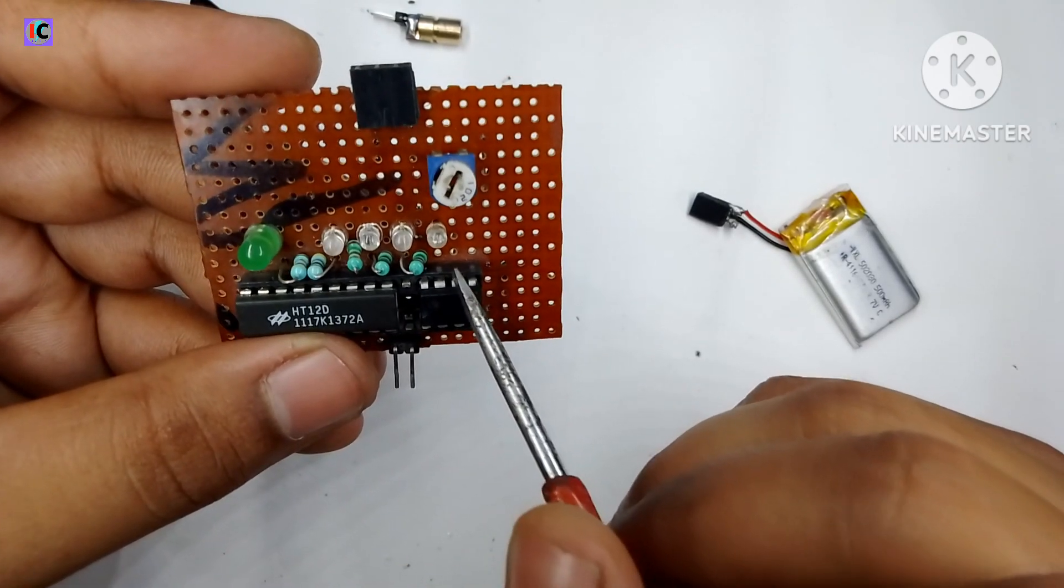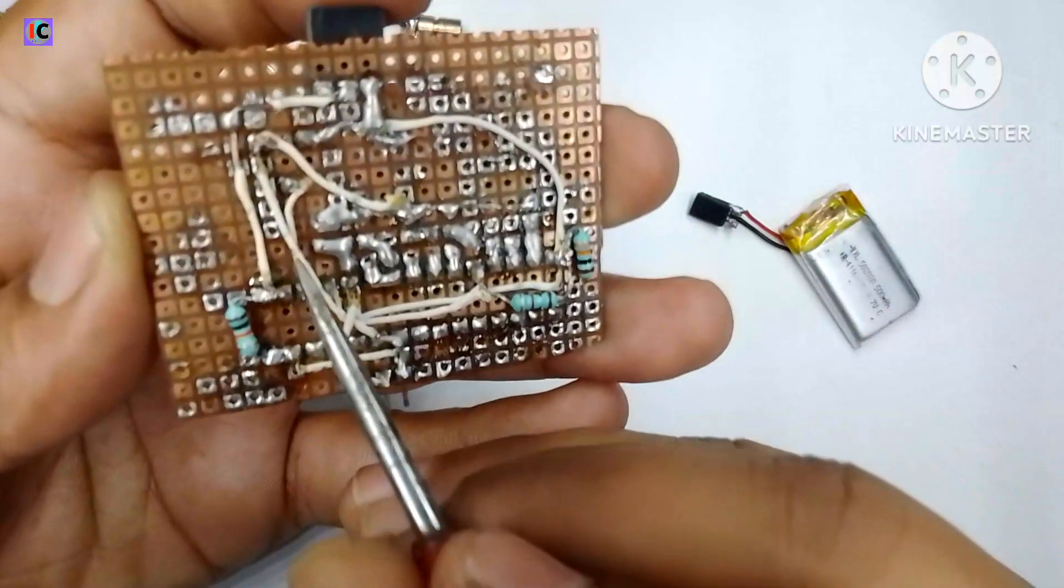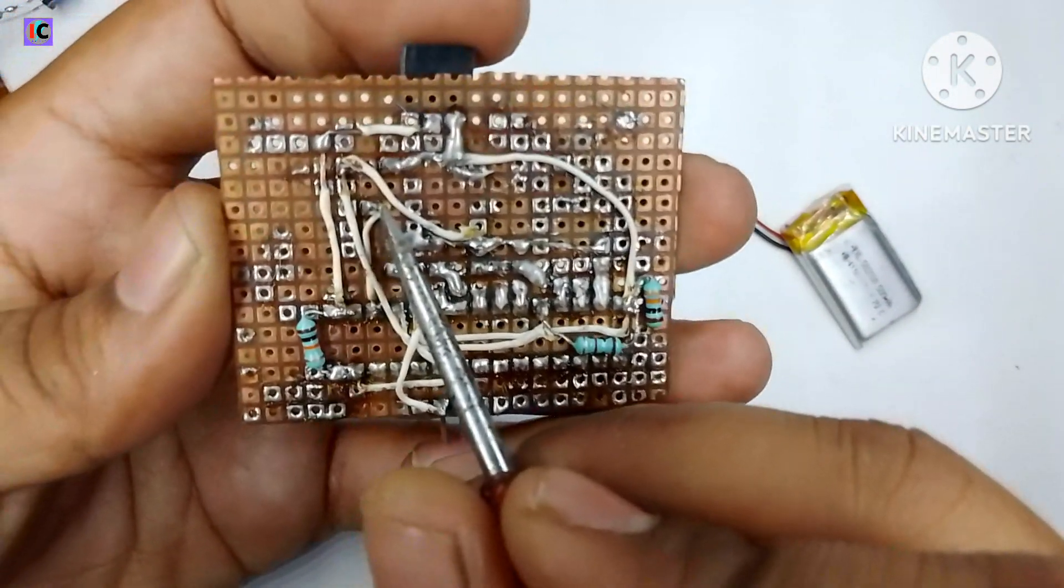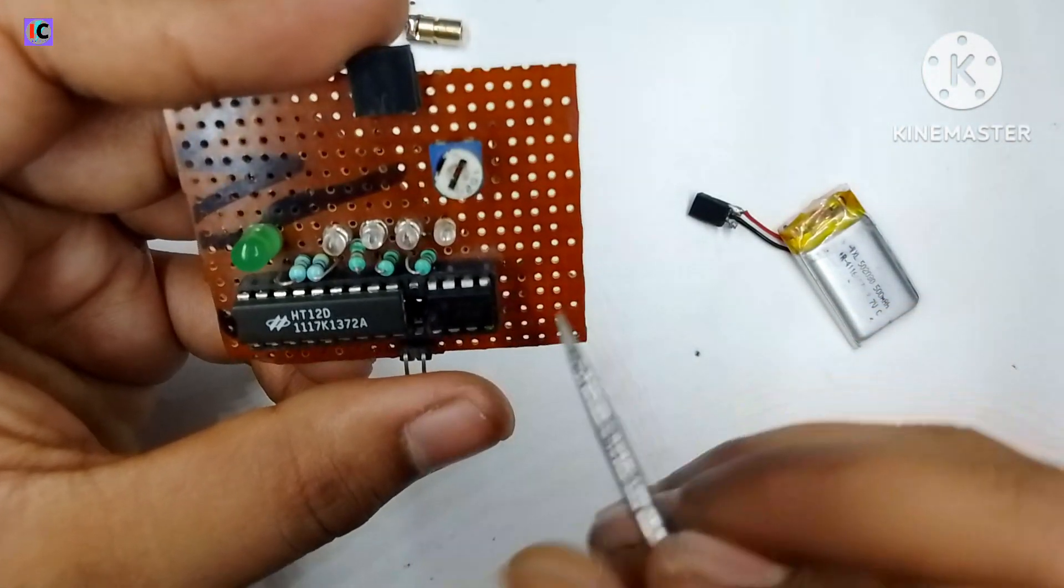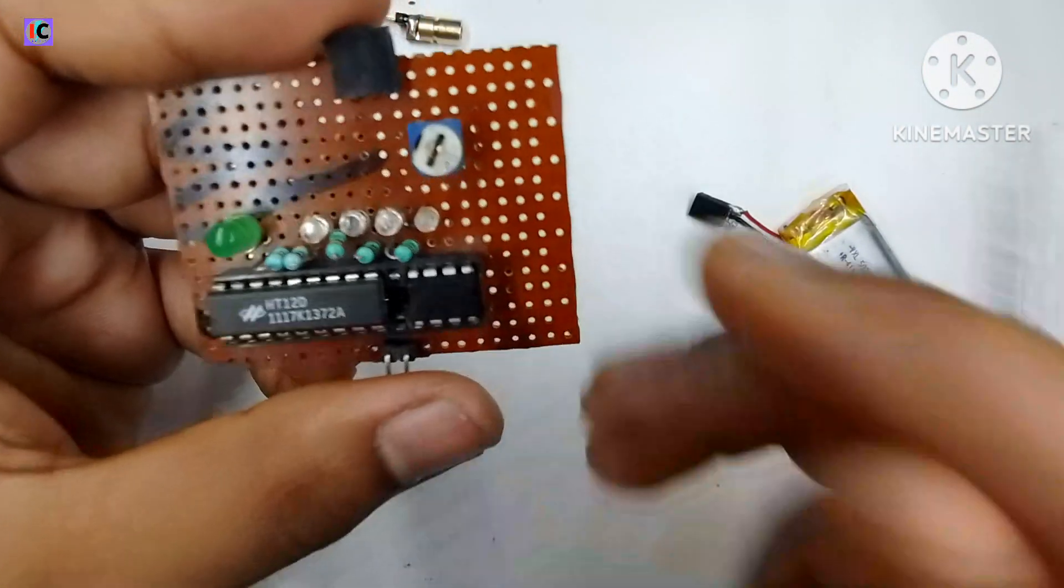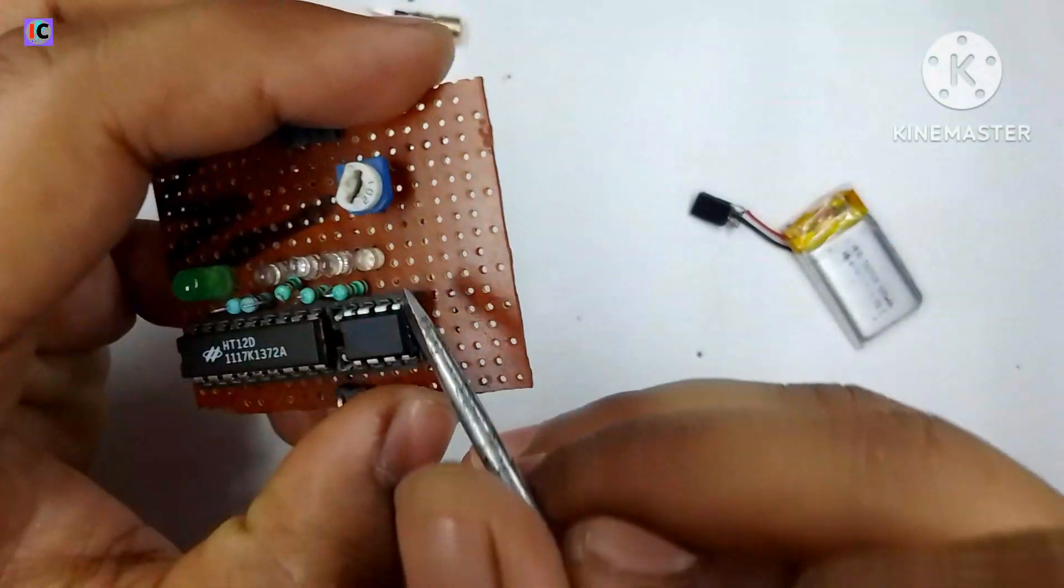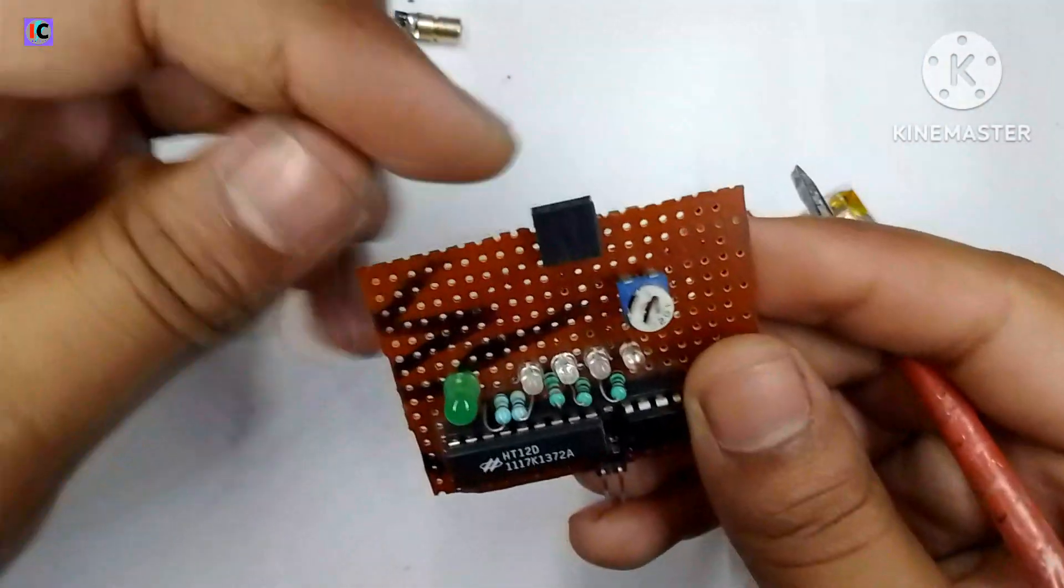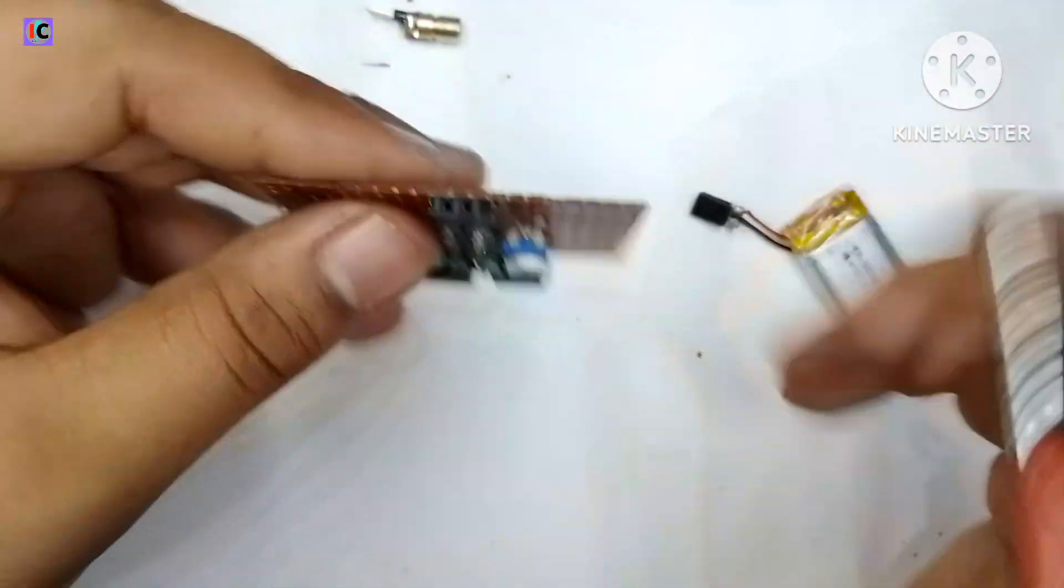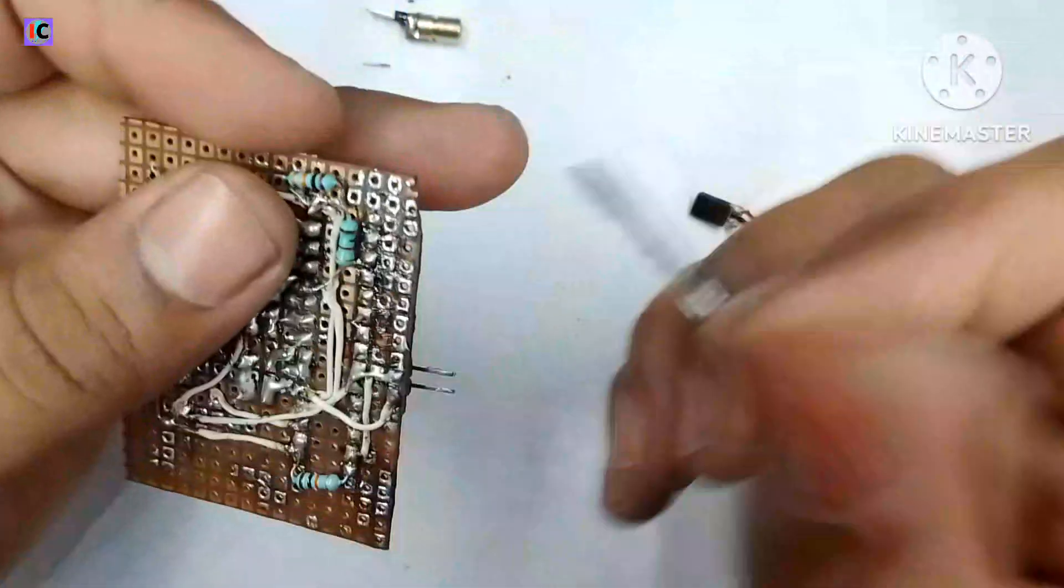Pin number 6 of the LM358 is connected at the 10k potentiometer middle pin so that we can control the amplification of this whole receiver section. Pin number 5 of the LM358 is connected to the sensor pin and one resistor which is the 10k resistor to the ground. The sensor is connected to the VCC 5 volt.